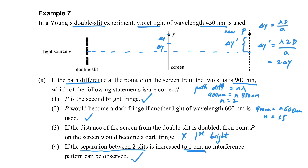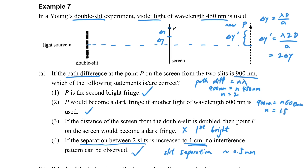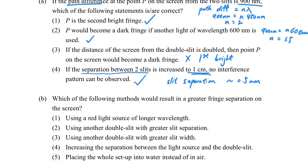If the separation of the two slits becomes too large, no interference can be observed. The slit separation should be around 0.5 mm for interference to occur.